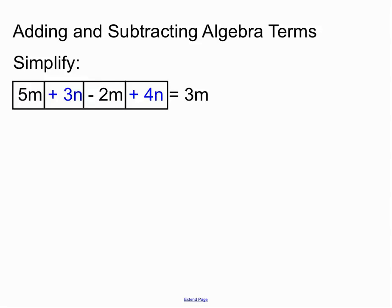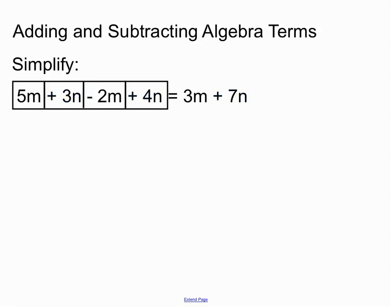When we have a look at the n terms, you'll see in the boxes there we have a plus 3n and another plus 4n, and we can join them together in a normal way and make 7n. So that's our final answer there. So the signs that come before a term belong to that term, and that helps us know what to do when we're joining them up.